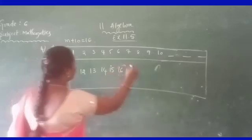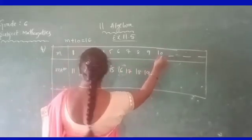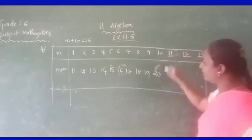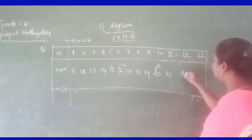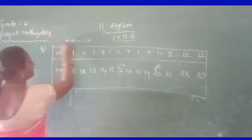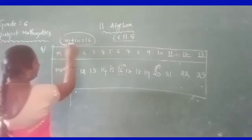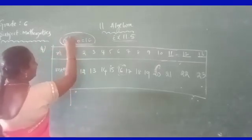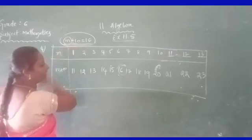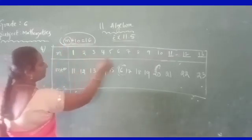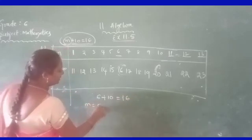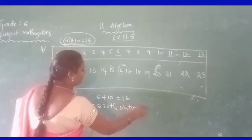Continuing: 9 plus 10 is 19; 10 plus 10 is 20; 11 plus 10 is 21; 12 plus 10 is 22; 13 plus 10 is 23. Using these values, which variable satisfies the equation M plus 10 equals 16? When M is 6, 6 plus 10 is 16. So M equals 6 is the solution of the equation.